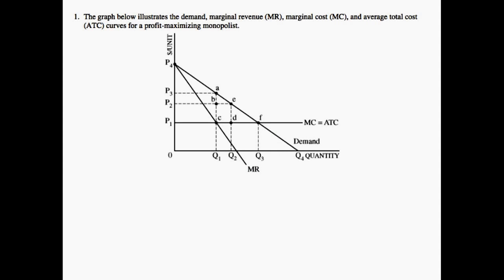So in the planning period of this FRQ, we are given the question which states: the graph below illustrates the demand, marginal revenue, marginal cost, and average total cost curve for a profit-maximizing monopolist. The first thing you should identify is that we're being asked about a profit-maximizing monopolist, and therefore marginal revenue will be set equal to marginal cost. As you're thinking about this question, you want to start looking at where marginal revenue equals marginal cost.